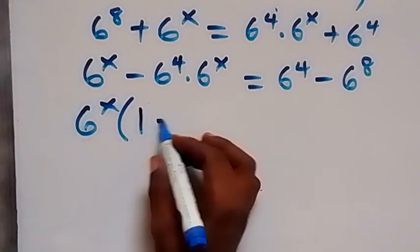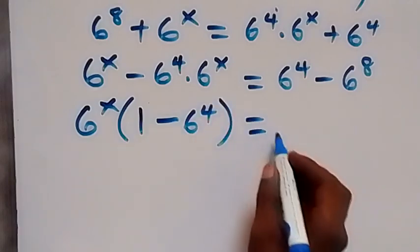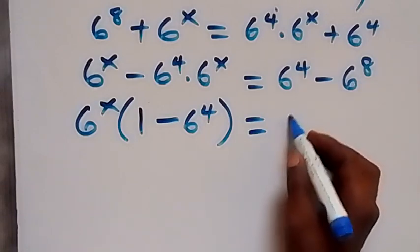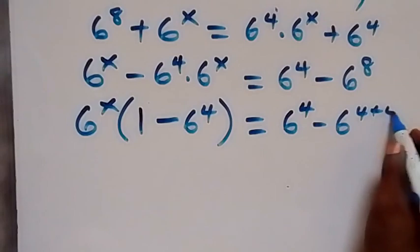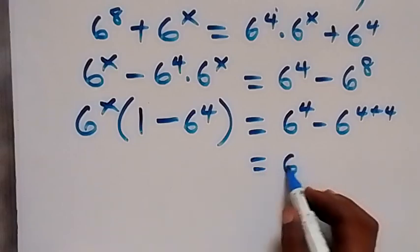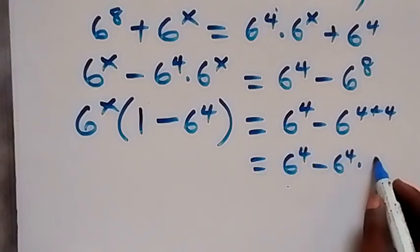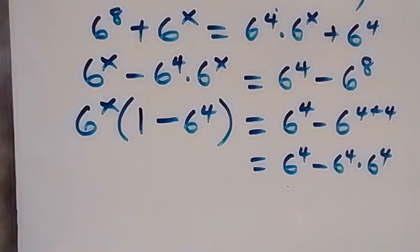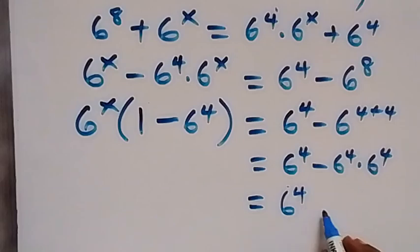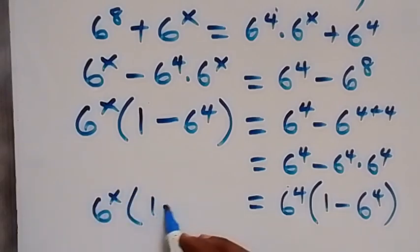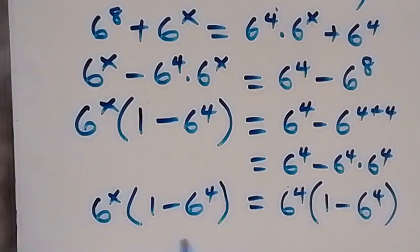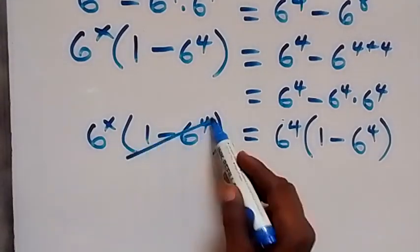What we have left is 1, then minus 6 raised to power 4, equals — from here we can also factor 6 raised to power 4 out, so this becomes 6 raised to power 4 times 6 raised to power 4 plus 4, which is 6 raised to power 4 times 6 raised to power 8. We factor 6 raised to power 4 out and get 6 raised to power 4 times 1 minus 6 raised to power 4. Comparing with the left-hand side, we have 6 raised to power x times 1 minus 6 raised to power 4, so the 1 minus 6 raised to power 4 cancels out on both sides.